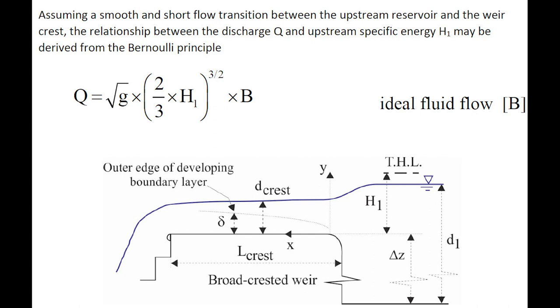Assuming a smooth and short flow transition between the upstream reservoir and the weir crest, the relationship between the discharge and the upstream specific energy may be derived from the Bernoulli principle.